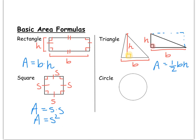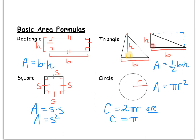Another basic shape we'll talk about in this unit is the circle. To calculate the area of a circle, you just need to know its radius, which is the distance from the center to anywhere on the circle's border. The area of a circle is pi times the radius squared. The circumference — which is just the name for the perimeter of a circle — can be found by calculating 2 times pi times the radius, or equivalently pi times the diameter.